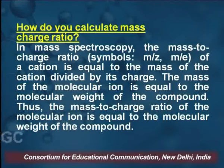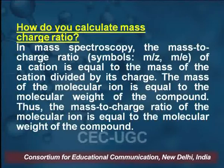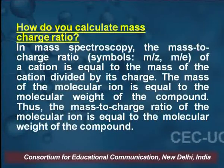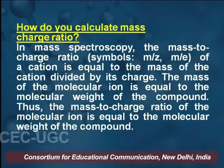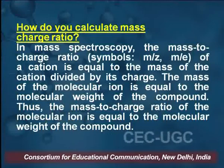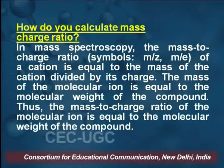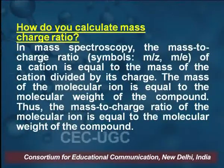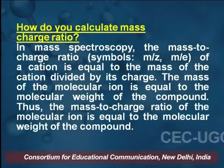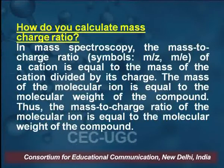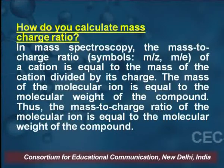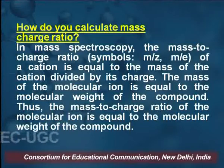How do you calculate the mass-charge ratio? The charge-mass ratio can be measured by the Thomson method; there is also the helical method. The principle behind the experiment is the same: the beam passes through the magnetic field and is deflected due to electric and magnetic fields. In mass spectroscopy, the mass-to-charge ratio m/z equals the mass of the cation ion divided by its charge, which equals the molecular weight of the compound.